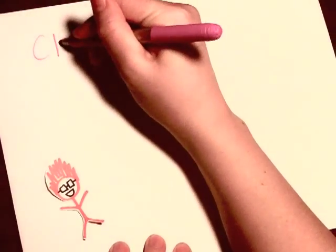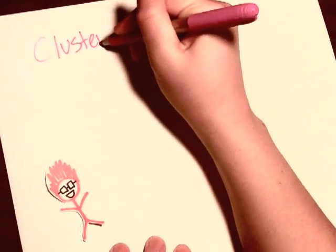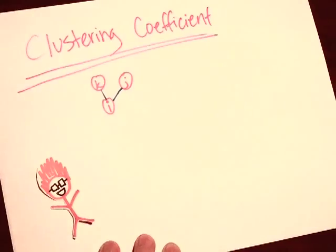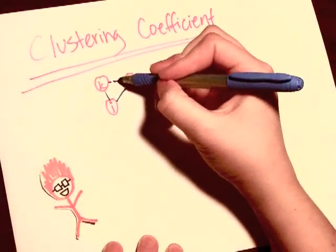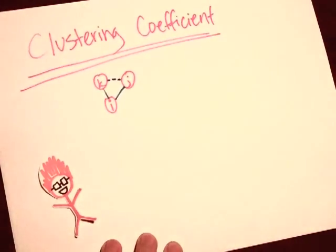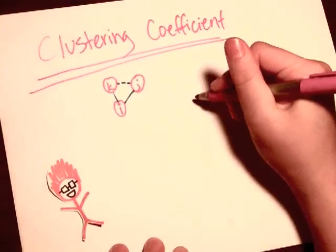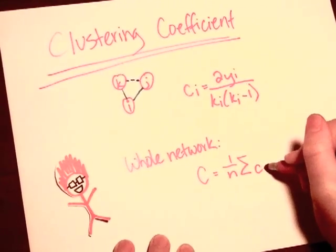Which is the clustering coefficient. For the whole network, the clustering coefficient is determined by this equation, which has the clustering coefficient average over the number of nodes.